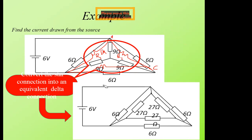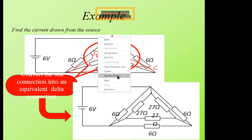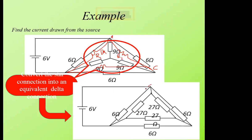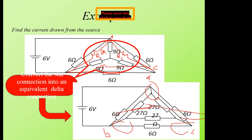After that, we re-analyze the circuit. You can see that this is point A, this is point B, and this is point C. The 6-ohm and the 27-ohm resistors are in parallel, and again the 6 and the 27 are in parallel.